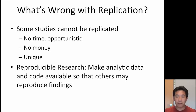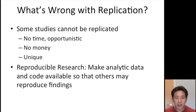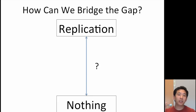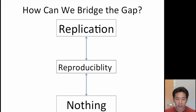So the idea is, if you can't replicate it, is the alternative just to do nothing — just let that study stand by itself? The idea behind reproducible research is to create a minimum standard or middle ground where we won't be replicating the study, but maybe we can do something in between. You have the gold standard, which is replication, and the worst standard, which is nothing. Reproducibility is what bridges the gap between replication and nothing.